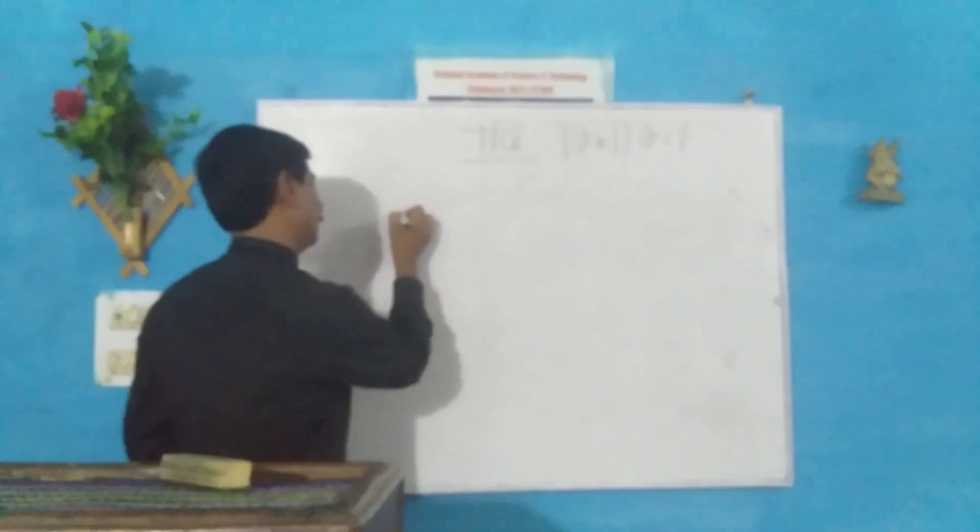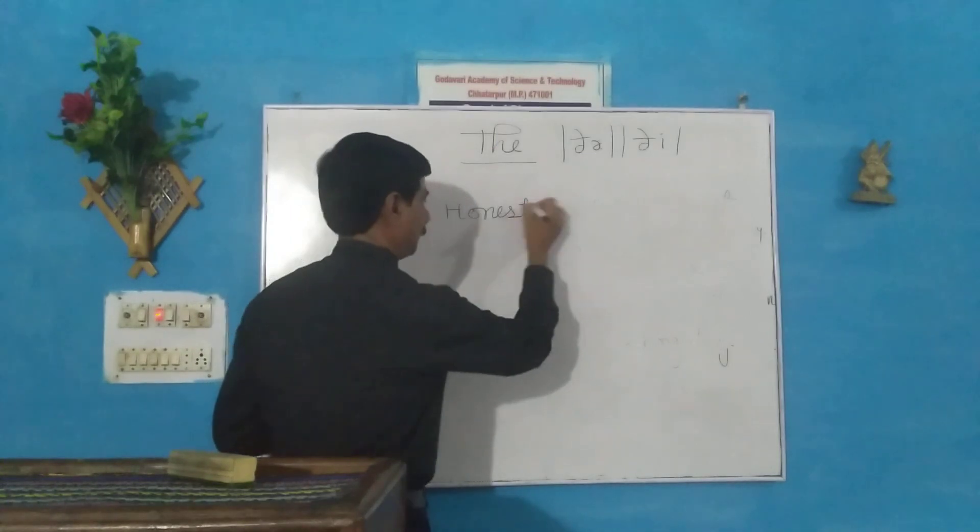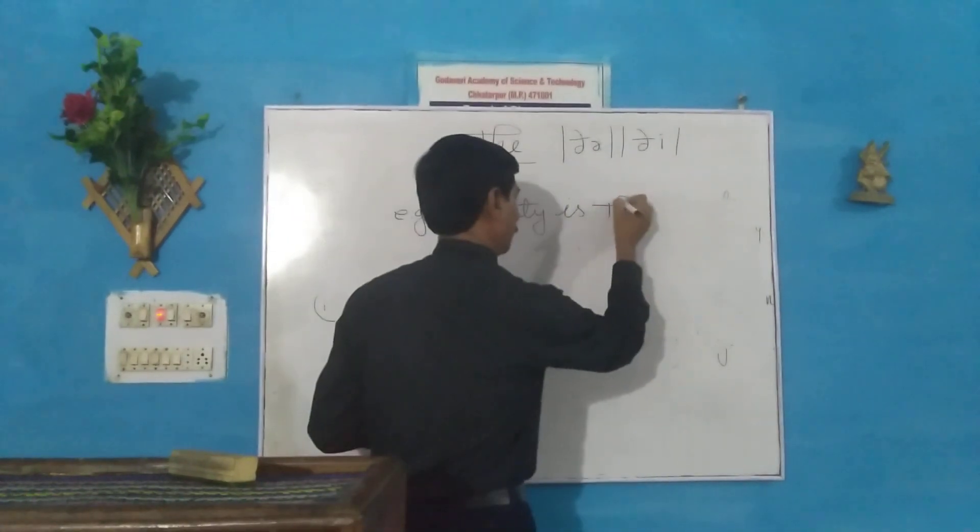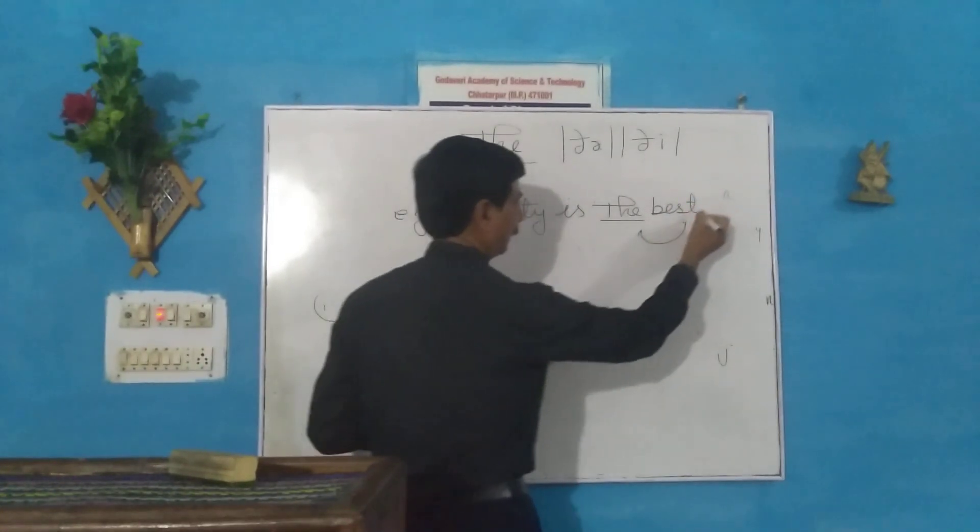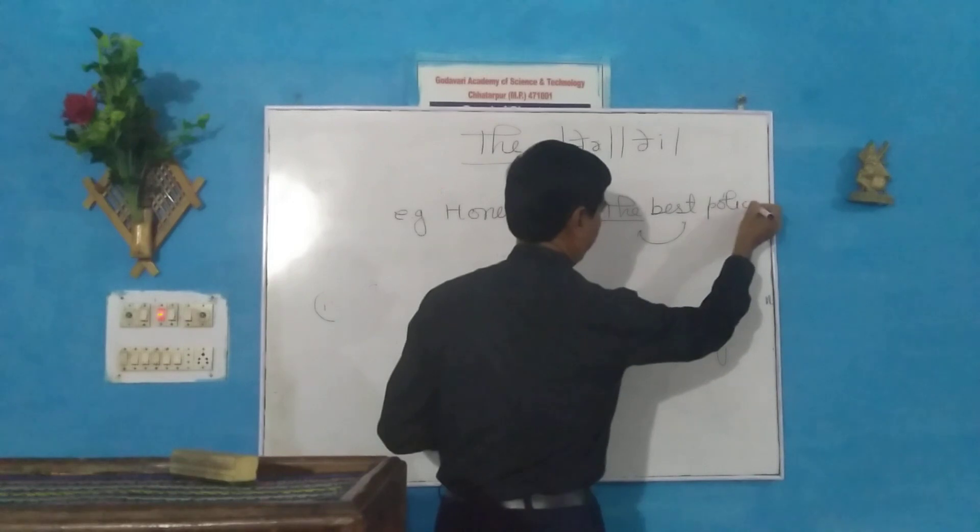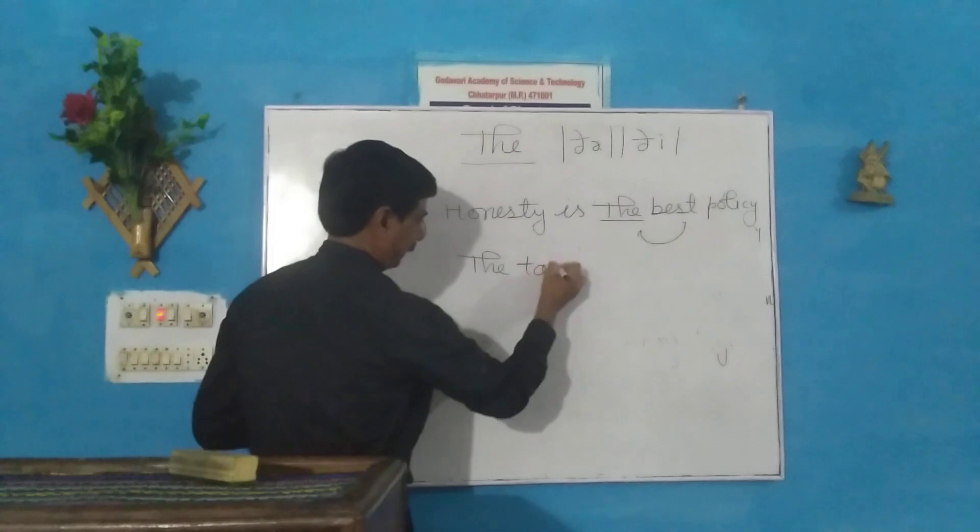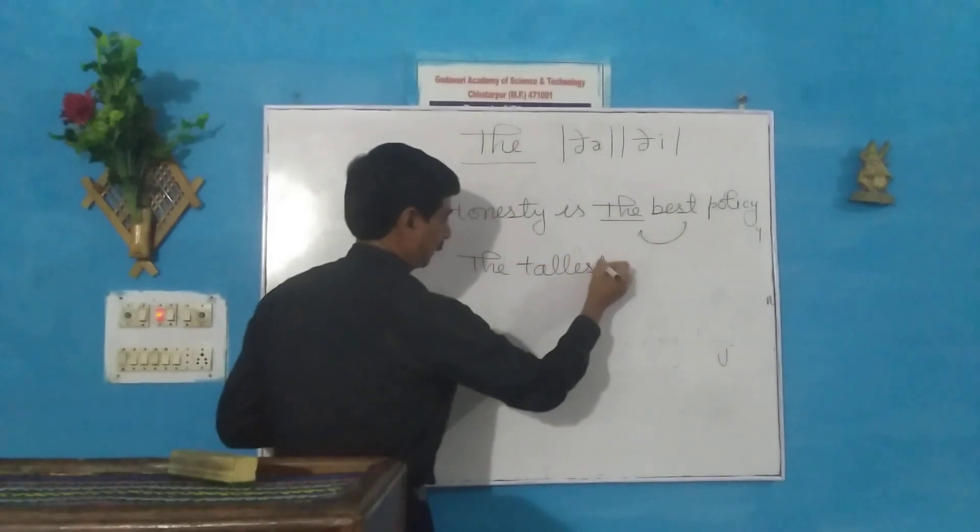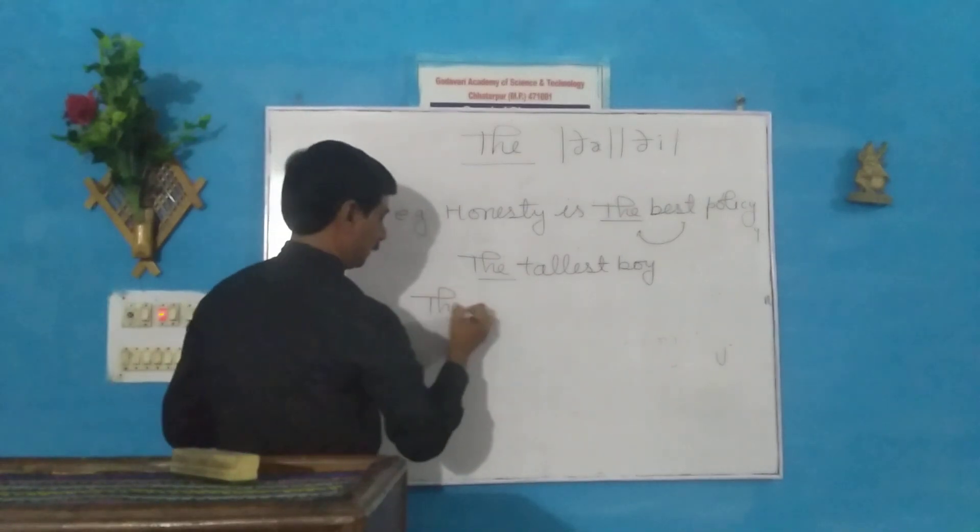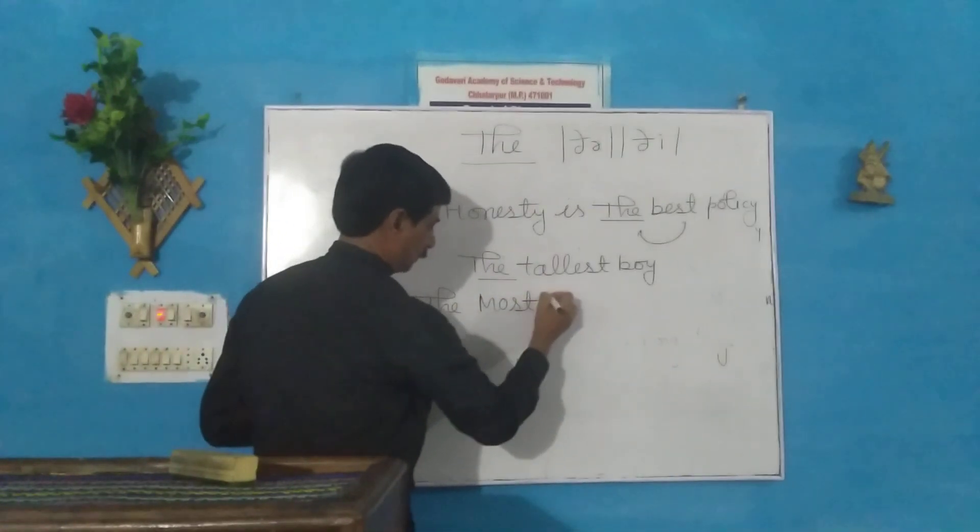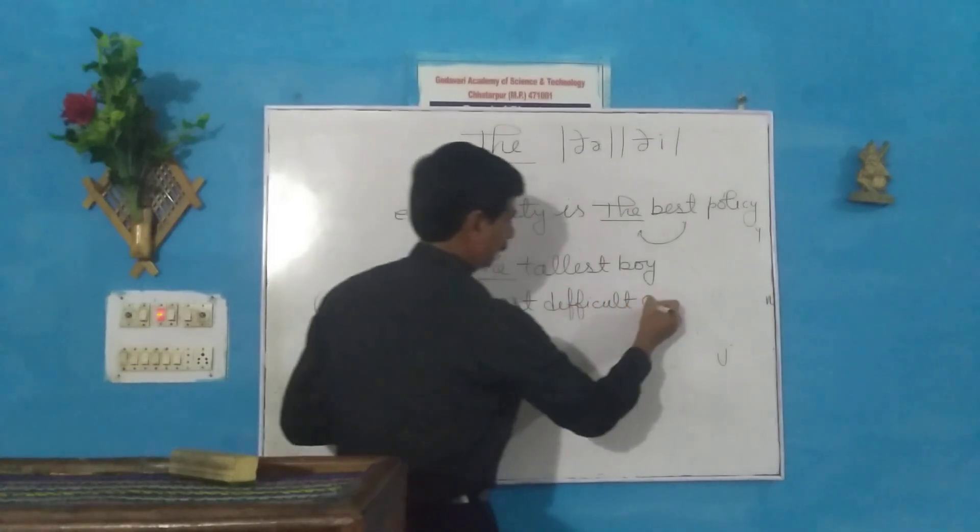Example: Honesty is the best policy. Good, better, best - superlative. The tallest boy. Here, the most difficult question. Most is superlative.